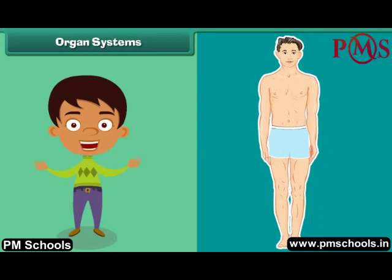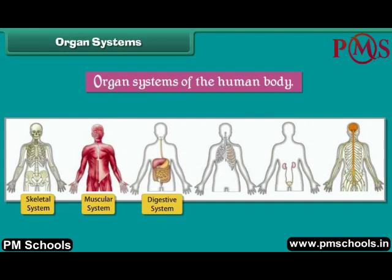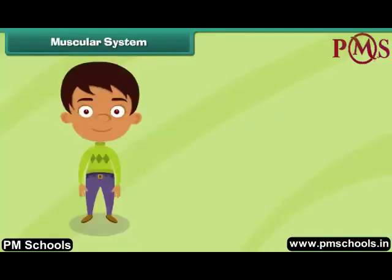The internal organs of the human body are grouped together to form different organ systems. Each organ system performs a special function. Some important organ systems of the human body are: skeletal system, muscular system, digestive system, respiratory system, excretory system and nervous system. Let us now learn how each organ system works.